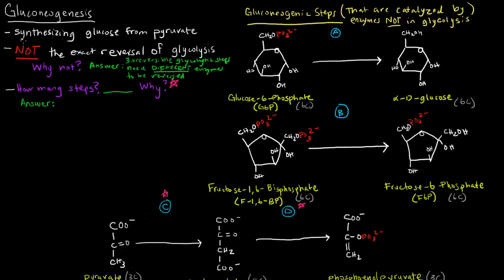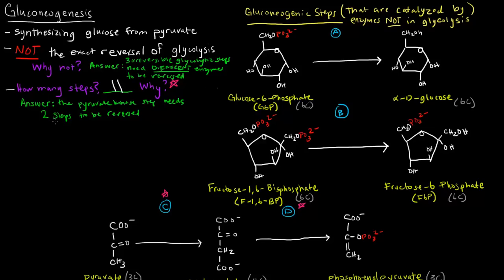So how many steps is gluconeogenesis? Glycolysis was 10 steps. Gluconeogenesis is actually 11 steps. The reason why is because the pyruvate kinase step from glycolysis needs two steps to be reversed. All other steps from glycolysis can be reversed in one step, but that extra step is why gluconeogenesis is 11 reactions long instead of just 10.